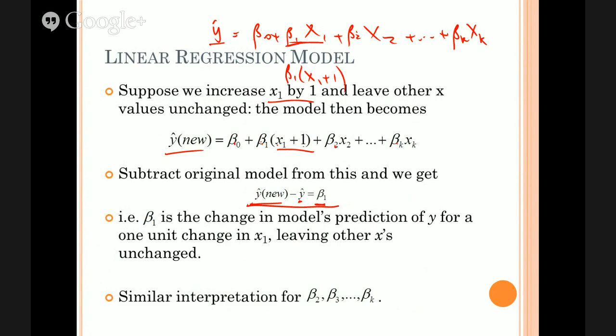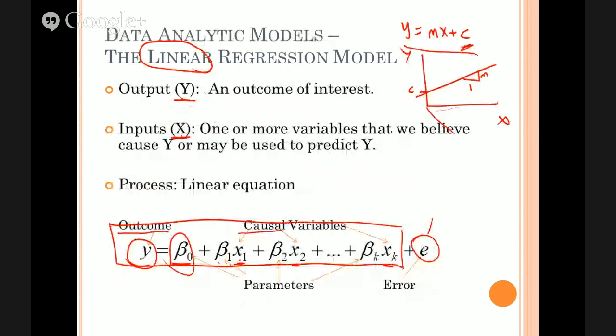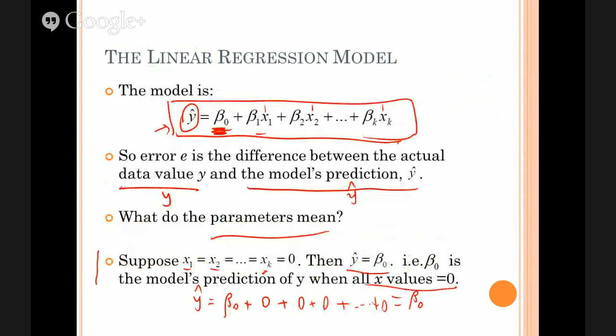In other words, the difference between the predicted value of y when you increase x by one versus what you'd have when you have x1 equal to its original value is just equal to beta 1. So that tells you the interpretation of beta 1. Beta 1 is the change in the model's prediction of y for a one unit change in x1, holding all the other x's unchanged. So that first half of that sentence is exactly what we mean when we talk about the slope of a line, like you do in your high school mathematics. Increase x by one, how much does y go up by, m, that's the slope. So that's what we're saying here, increase x1 by one, this is the change in the value of y in the model, in other words, it's the slope.